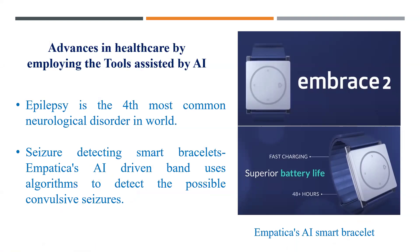A very recent example is a smart bracelet. Epilepsy is the fourth most common neurological disorder in the world, so identifying or predicting seizures on time is extremely important. This AI-driven band — a smart bracelet called Embrace2 — is being utilized for detection of possible convulsive seizures using an algorithm to detect them.